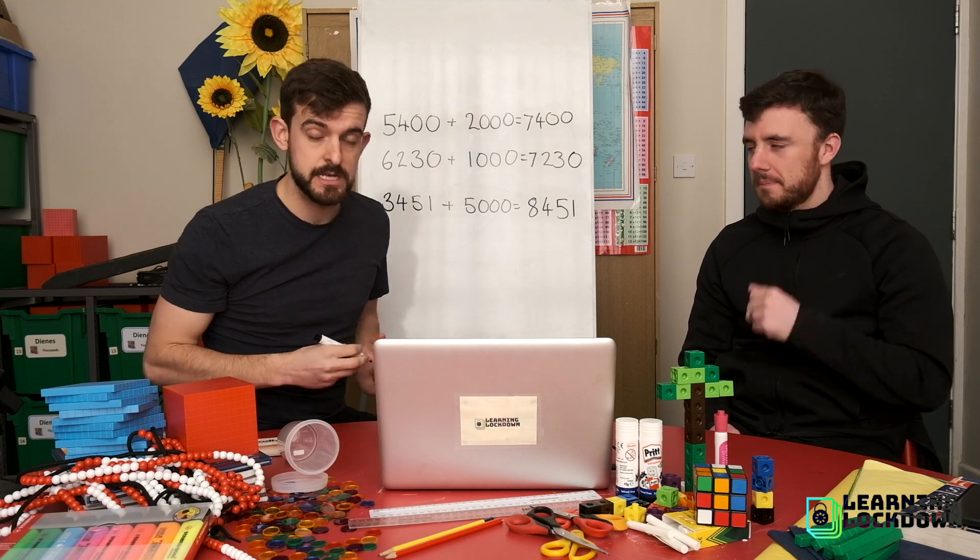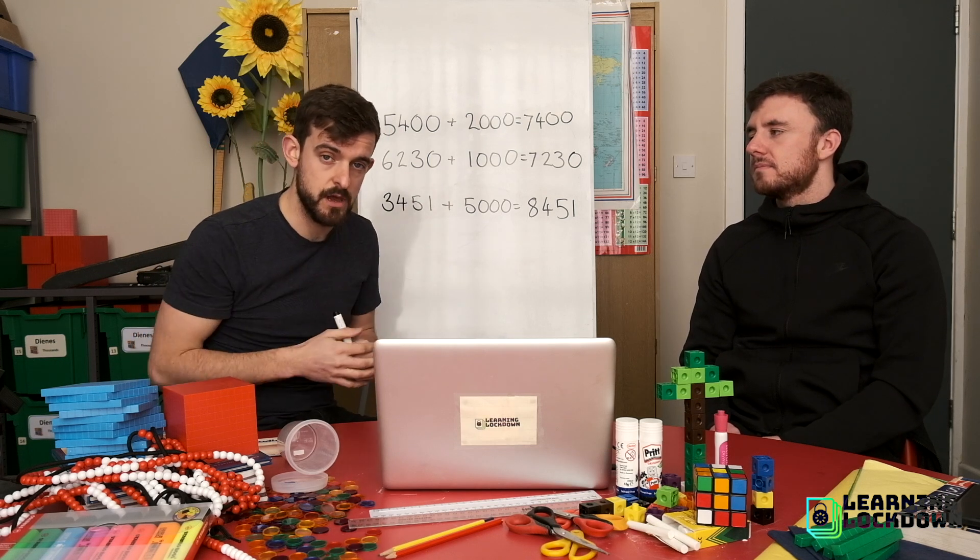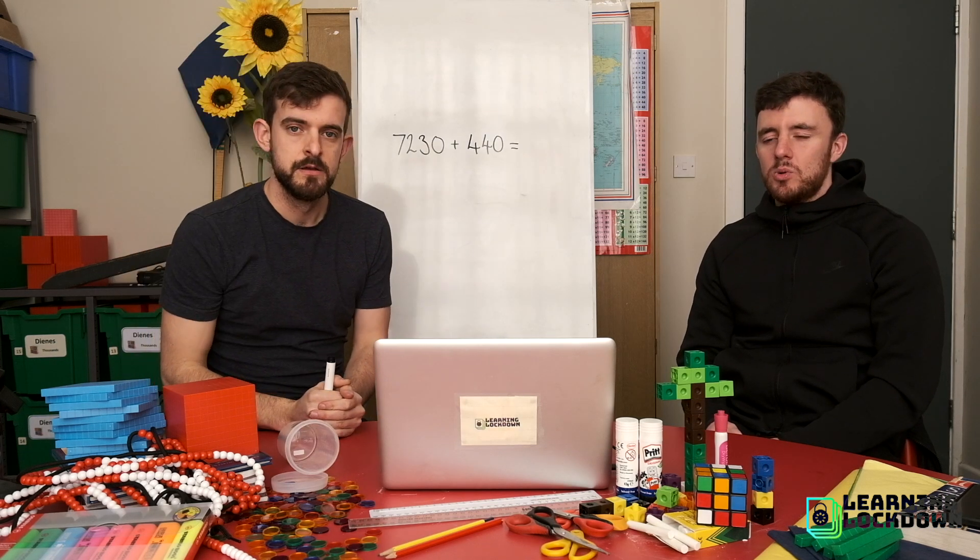So on the sheet down to level three. Only changing the thousands. Off you go.